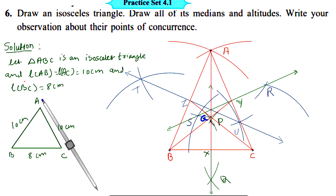Their point of concurrence is called the centroid and is denoted by the letter G. This point of concurrence is the centroid of triangle ABC.